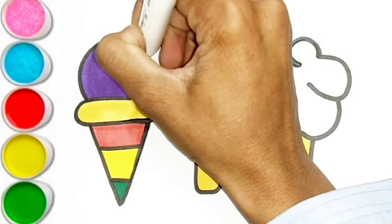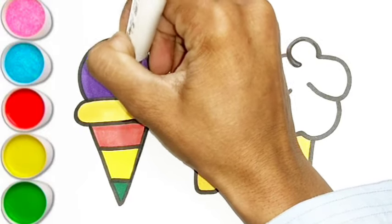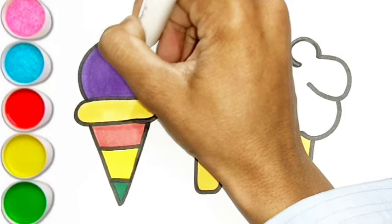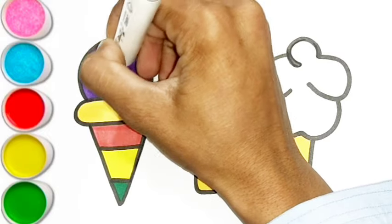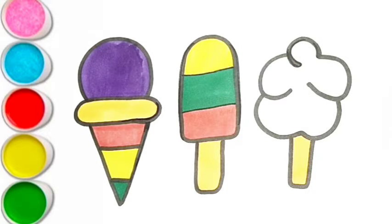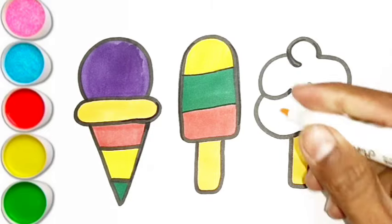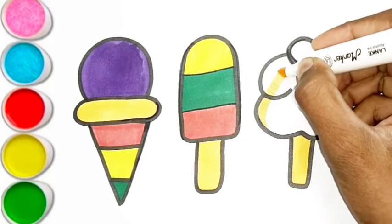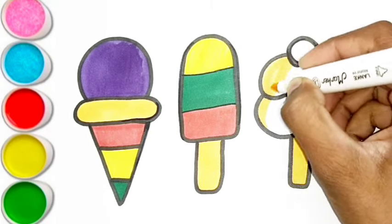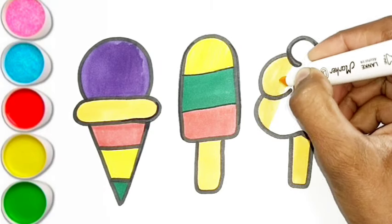D is for doll. D, d, doll. E is for elephant. E, e, elephant. F is for frog. F, f, frog.